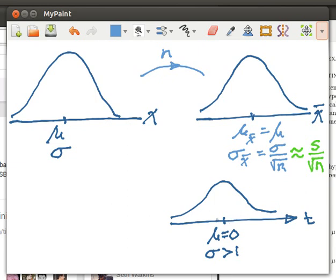A t-distribution, the area under the curve is still 1. The mean is 0 but the standard deviation is greater than 1. It's kind of squashed out a little bit more. This will help measure how many standard errors we would need to be at for certain probabilities to occur.